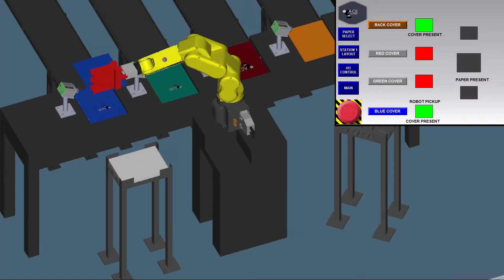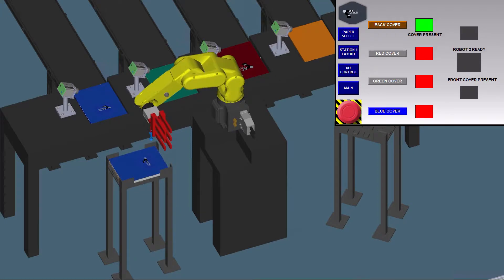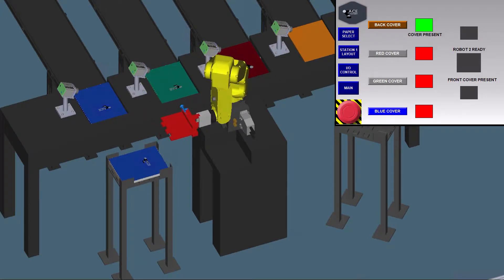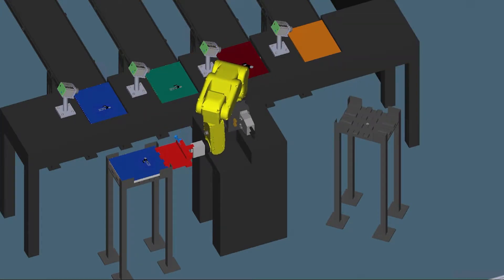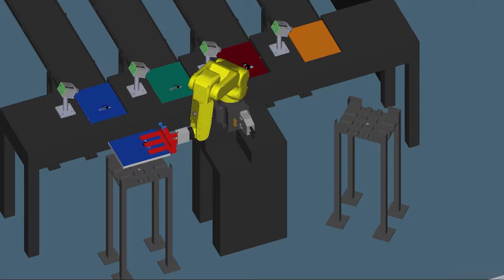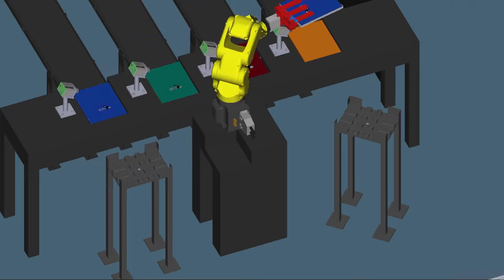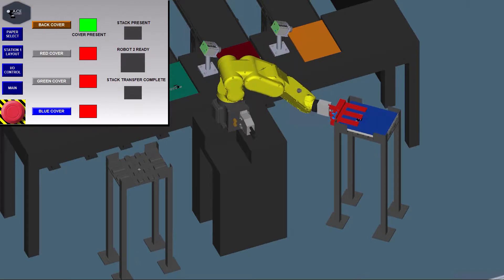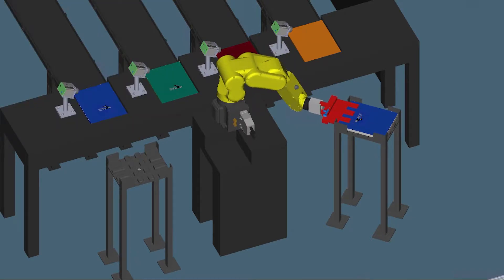Now that the stack of paper has been placed on the back cover, the FANUC robot picks and places the front cover. The whole assembly is then transferred to the next forming table. The HMI indicates that the transfer has been completed and the next process can begin.